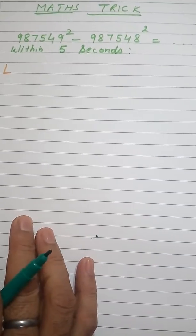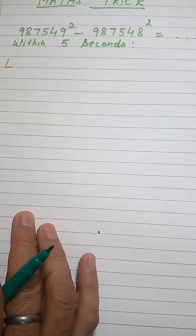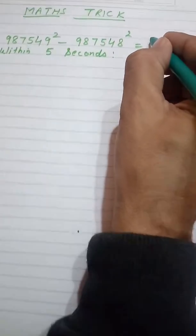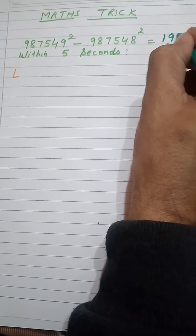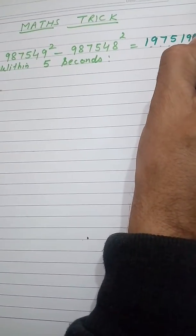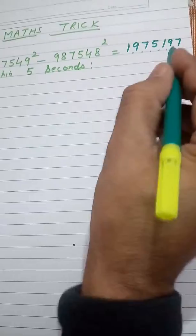Can you find this value within 5 seconds? I will give you 5 seconds. Now I can write this value, that is 1975197. Now what is the logic behind this one?